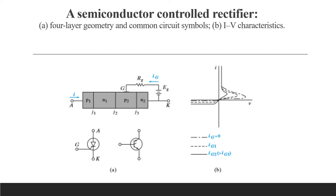When the SCR is biased in the forward blocking state and the gate has zero current flowing through it, we get the outermost IV curve. When we apply a certain gate voltage, the forward blocking state transitions to the conducting state at a lower voltage. Similarly, when we increase the current through the gate, this voltage is reduced further, meaning the device reaches its forward conducting state at an even lower voltage.